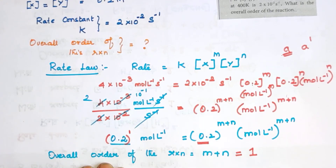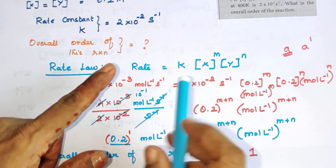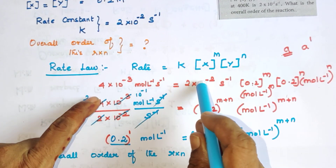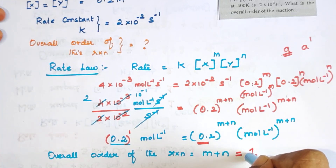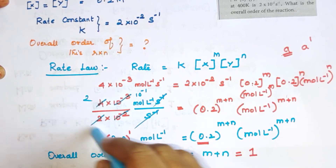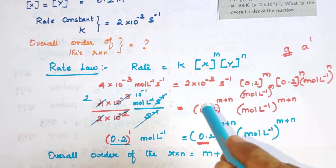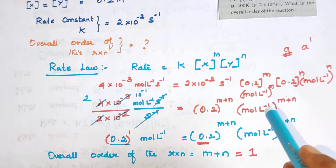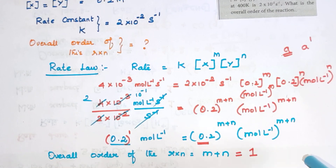From an examination point of view, this is a 2 or 3 mark question. Marks are given for writing the rate law, correct substitution, and the correct answer. Make sure to include both numerical values and units in the substitution. If you cancel units correctly and arrive at the correct result with units, you will get full marks.